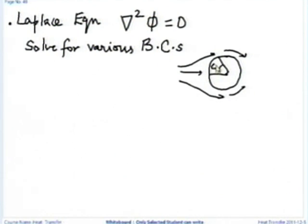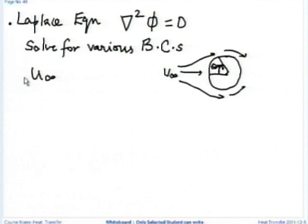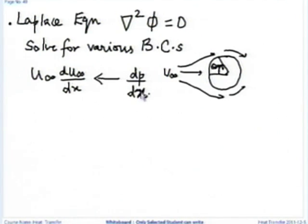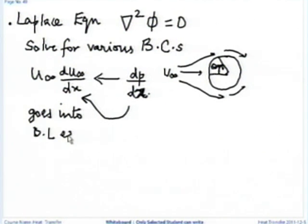Laplace equation solutions are available and have been attacked by so many mathematicians — that is why potential flow solutions are so relevant for fluid mechanics. How is the inviscid region solution useful for the viscid region? If I know u∞, then u∞ · du∞/dx gives me dp/dx. This dp/dx is sitting in my boundary layer equation, so I get the pressure impressed upon the boundary layer. That is the significance of irrotational flow or the inviscid solution.